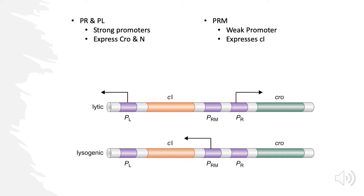I want to lay some groundwork: associate PR and PL with lytic growth, and PRM with lysogenic growth. Also, a crucial detail — PR and PL are very strong promoters, while PRM is a weak promoter. Keep that in your back pocket because it will come back to explain some important things.